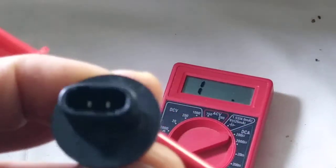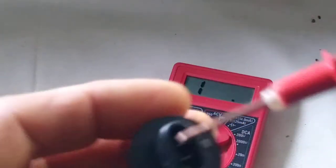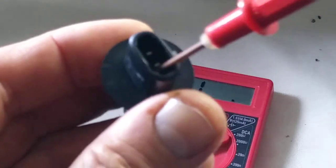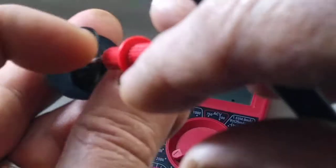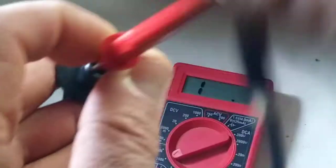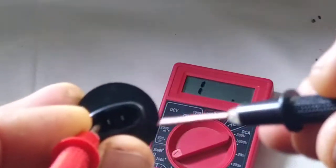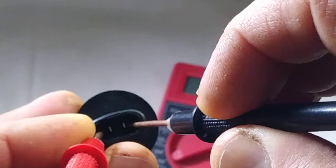One of them, the red one, goes to like right there, and the black one goes to the other prong. And at the same time we're gonna look at the multimeter.